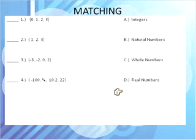For the first one, we have a set of numbers 0, 1, 2, 3. So we want to know if they're integers, natural numbers, whole numbers, or real numbers. And they are whole numbers. Whole numbers begin with 0 and they do not have any fractions or decimals.